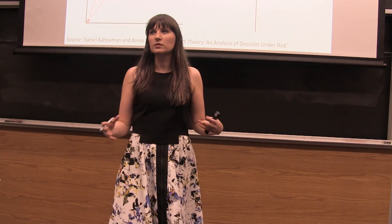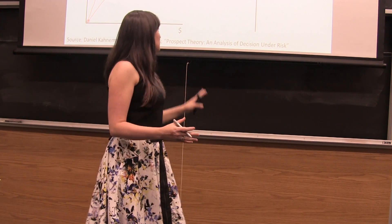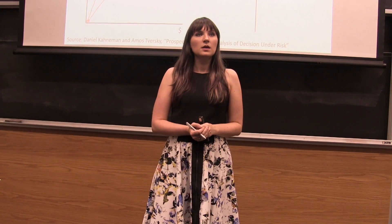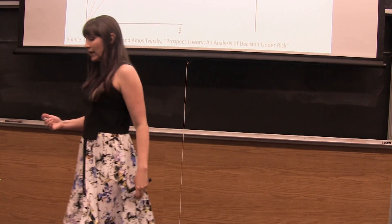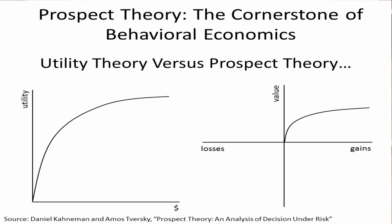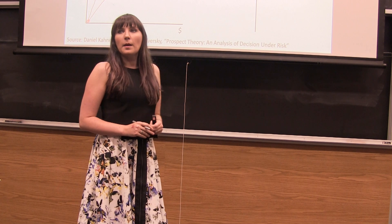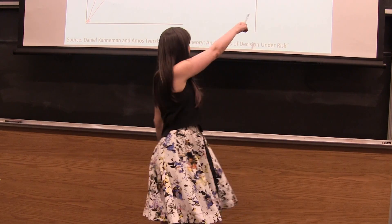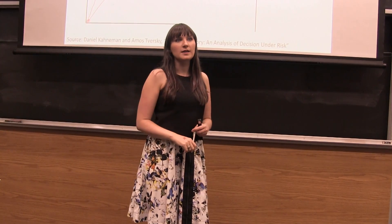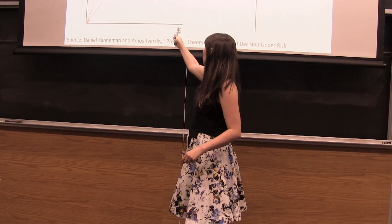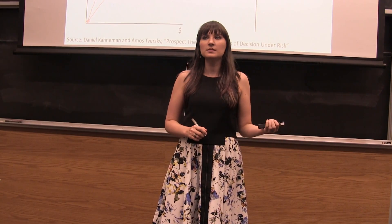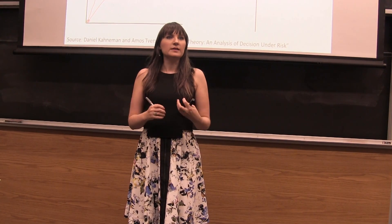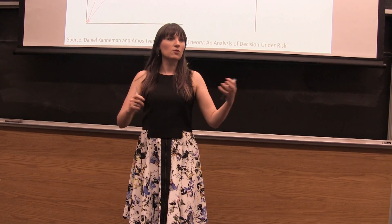They only called it a value function because they didn't want to use the same word — it would get confusing. When we're looking at things we would consider gains, the value function looks pretty much like the utility function; it's got the same shape. But notice here, our x-axis is not defined as levels of wealth anymore — here we see gains and losses. Prospect theory assumes that people tend to think about their decisions in terms of gains and losses, and think about those changes rather than automatically incorporating them into their overall level of wealth.